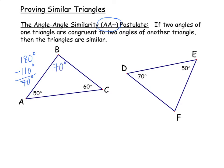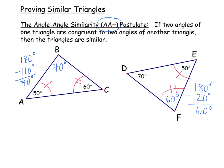We can do the same thing for the other triangle. Adding 70 and 50 gives 120; subtracting from 180, we find angle F measures 60 degrees. Now it's clear that there are two angles in one triangle congruent to two angles in the other: angle A is congruent to angle E, and angle C is congruent to angle F.